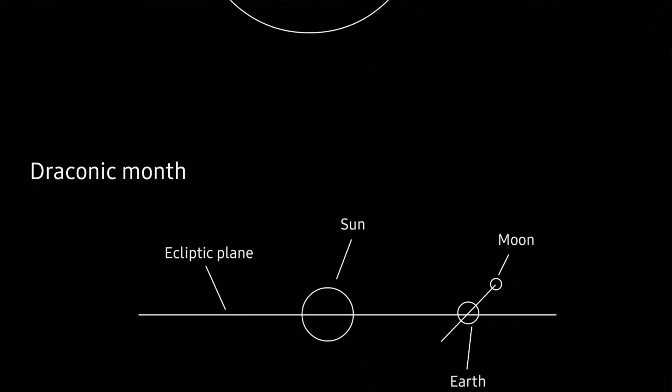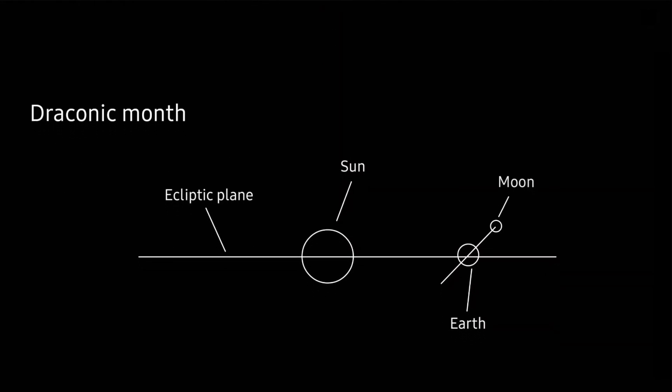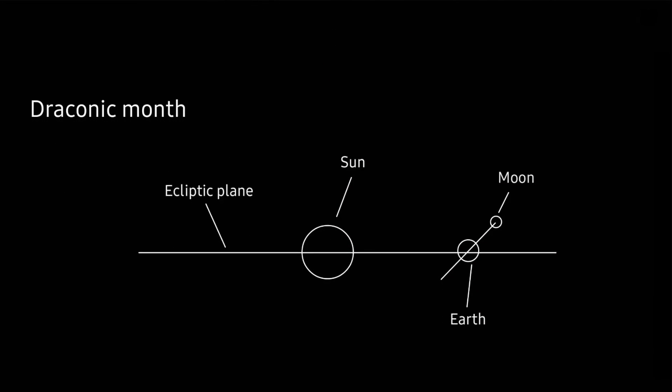The next important orbital period is called the draconic month. To understand this one, we have to change our point of view. Instead of looking from above the ecliptic plane, we look at the three bodies from inside the ecliptic plane. From this perspective, you realize that the orbital plane of the Moon around the Earth is not exactly the same as the orbital plane of the Earth around the Sun — the Moon's orbital plane is inclined about 5.14 degrees with respect to the ecliptic plane.